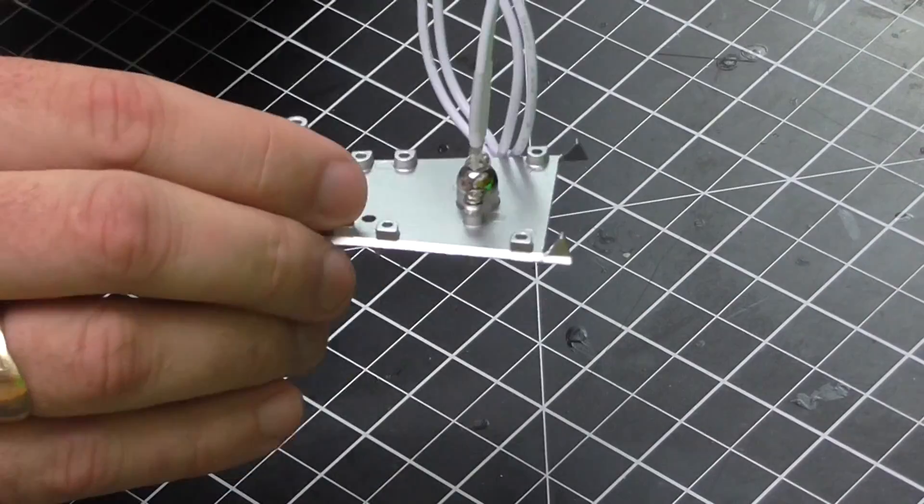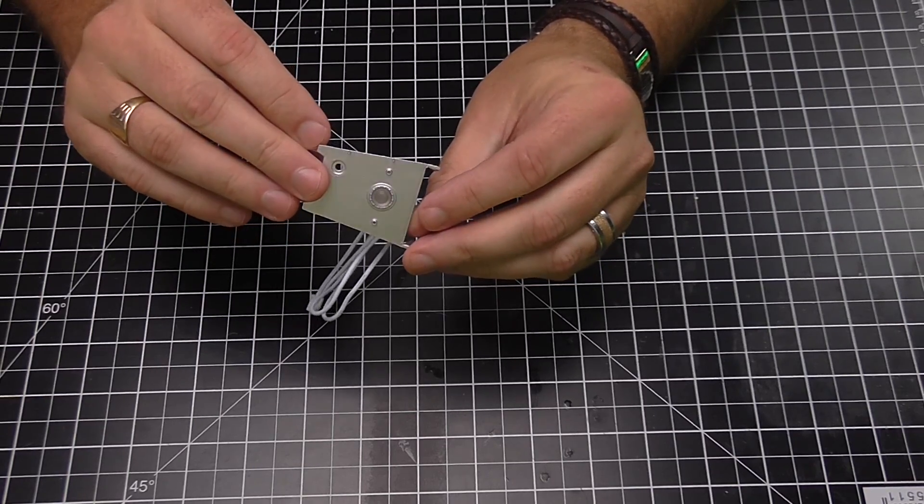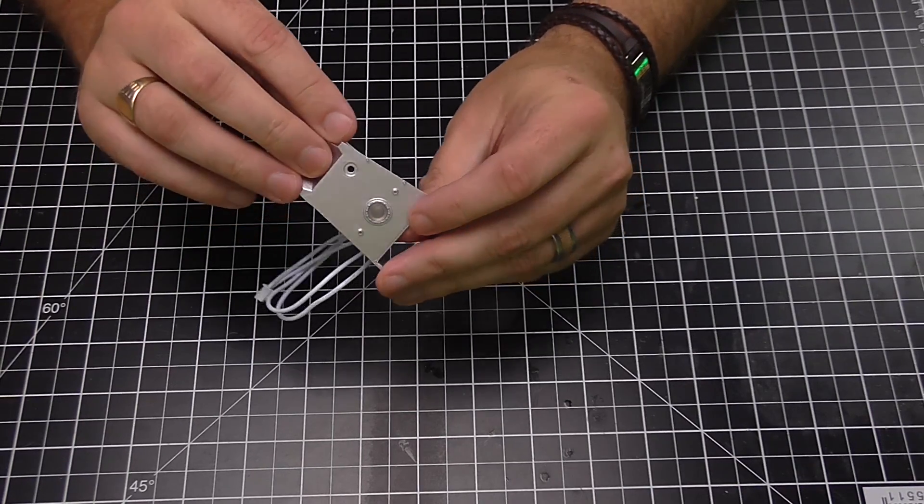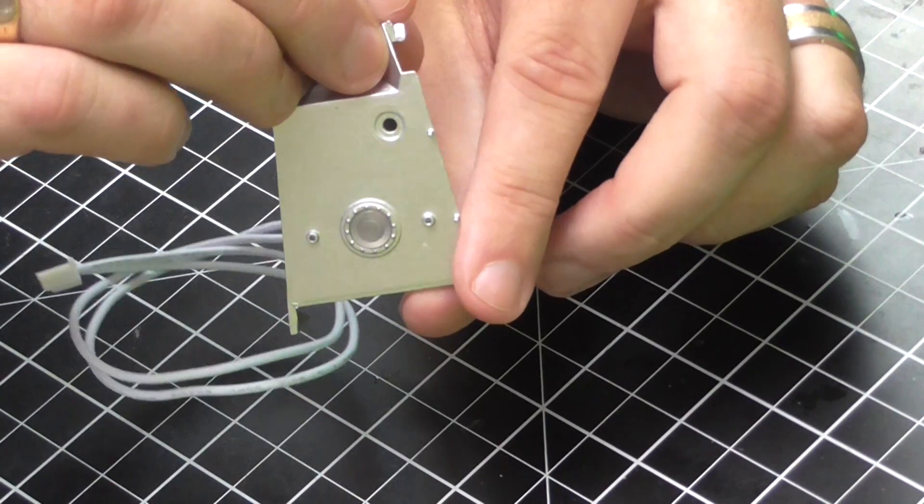And there you go. That's the light in. And from the other side there, as you can see, you can't really see the bulb because the window is diffused. So that's going to look really good lit up. I really do hope I can figure out a way to do that.